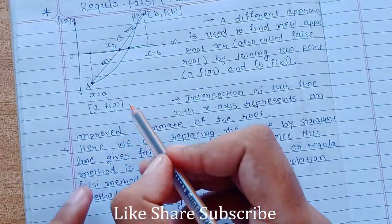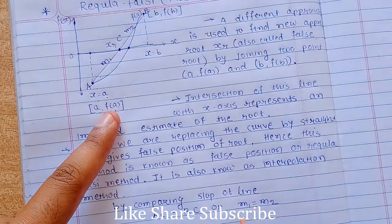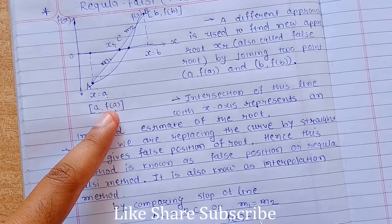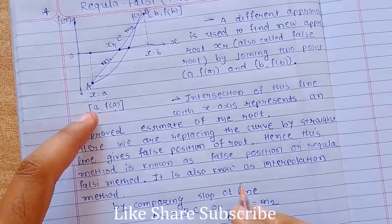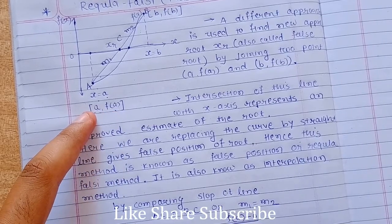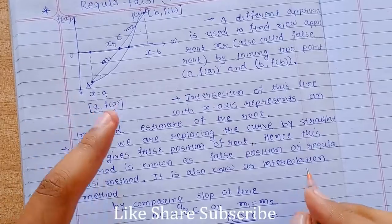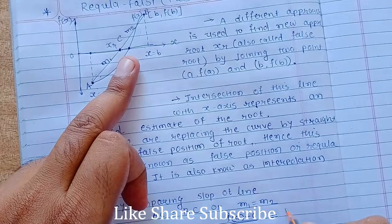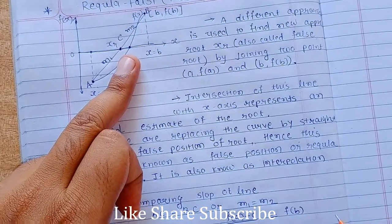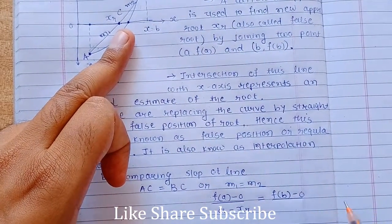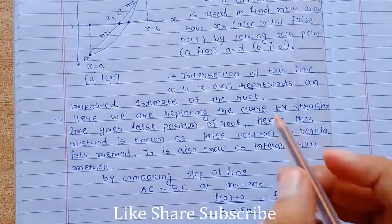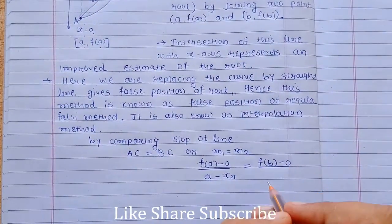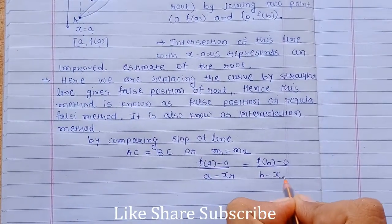let's take this point y2 minus y1. So y2 is f of a minus y1 is 0, divided by x2 is a, x1 is xr, equals to for this line y2 minus y1. So f of b minus 0 divided by x2, so x2 is b, x1 is xr, so b minus xr.